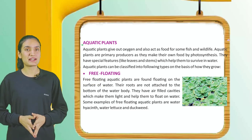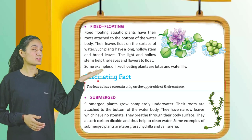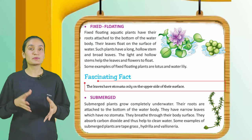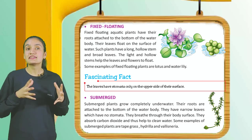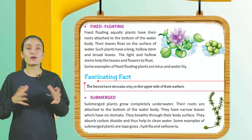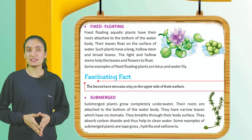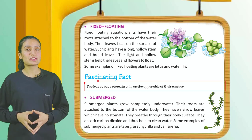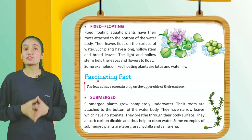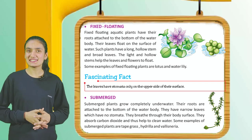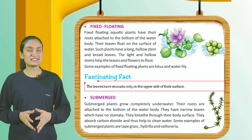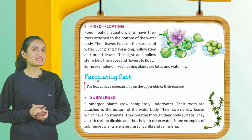Fixed floating: Fixed floating aquatic plants have their roots attached to the bottom of the water body. Their leaves float on the surface of water. Such plants have a long hollow stem and broad leaves. The light and hollow stem helps the leaves and flowers to float. Some examples are lotus and water lily.